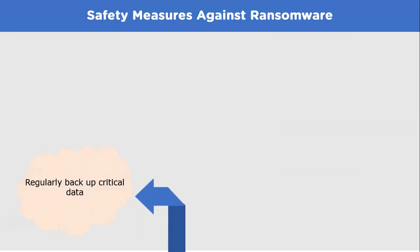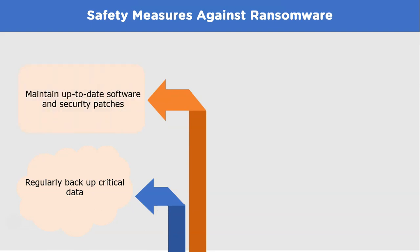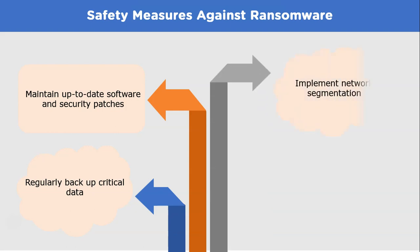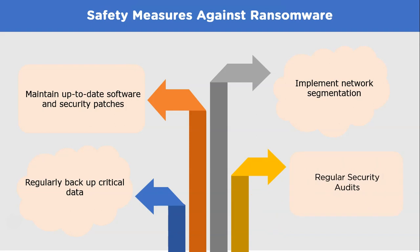Safety measures against ransomware include regularly backing up critical data to an offline or secure location, maintaining up-to-date software and security patches, implementing network segmentation to contain the spread of ransomware, training employees to exercise caution with email attachments and links, and conducting regular security audits.